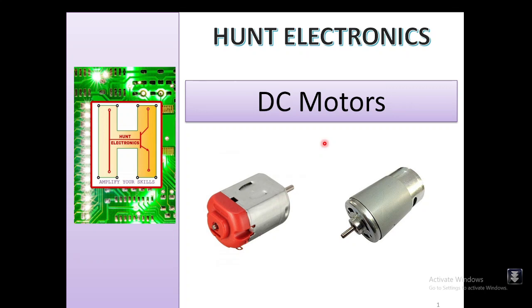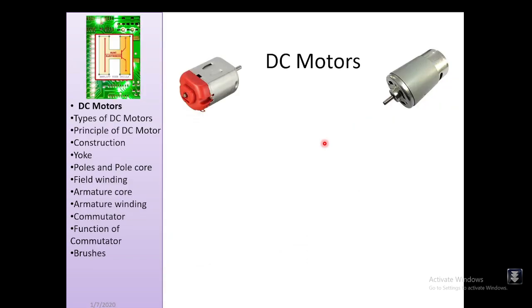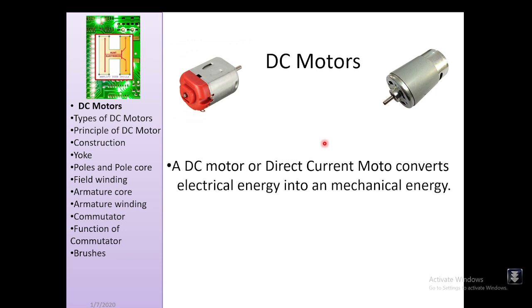Welcome to Hunt Electronics. Today's topic is the DC motor, also known as a direct current motor. We are going to learn about DC motor types, working principle, construction, and various parts like the yoke, pole, field winding, armature, armature winding, commutator, and brushes. A DC motor converts electrical energy into mechanical energy.